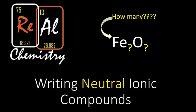Welcome to this episode of Real Chemistry. What we're going to do in this video is talk about how to write neutral ionic compounds. You're going to be given the elements in a compound — like iron and oxygen — and figure out how many of each there are. The way we do this is by knowing that our ionic compound has to be neutral.